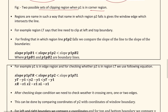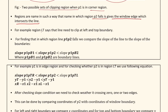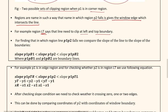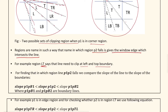These regions are named such that the name of the region in which P2 falls gives the window edge that intersects the line. For example, region LT means the line needs to be clipped at the left and top boundary.